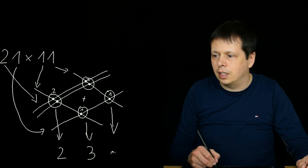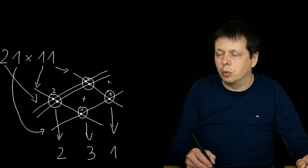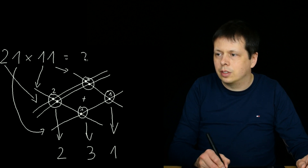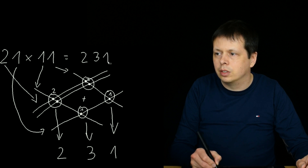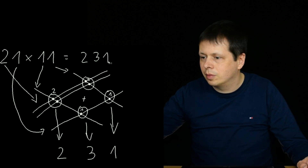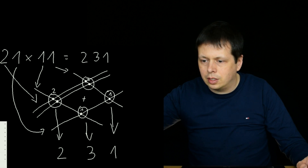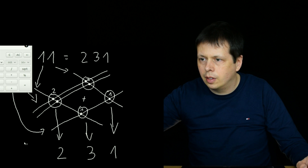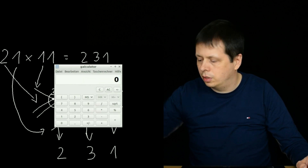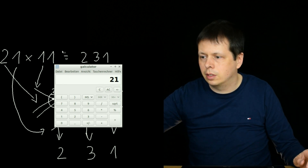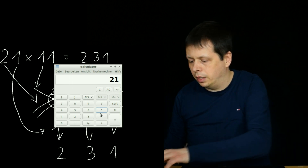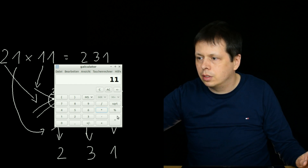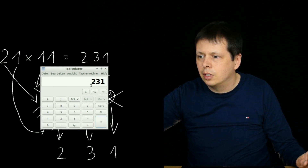The last digit is one. So the result is 231. Let me start the calculator to prove it. 21 multiplied by 11 equals 231. Correct! So, next example.